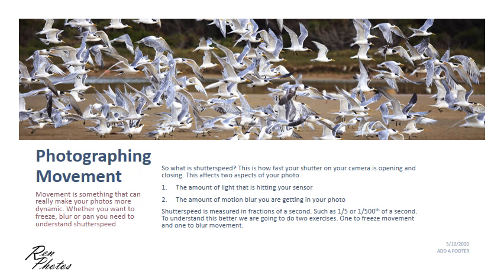Movement is something that will really make your photos more dynamic. Whether you want to freeze, blur, or pan - more on that later - you need to understand shutter speed. So what is shutter speed? This is how fast your shutter on your camera is opening and closing to take the photo. It affects two aspects of your photo: one is the amount of light that is hitting your sensor - the light you're allowing into the camera - and the other is the amount of blur you're going to have in your photo. Shutter speed is measured in fractions of a second, such as one-fifth or one-five-hundredth of a second.